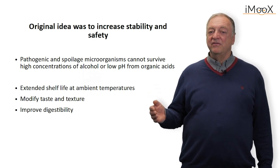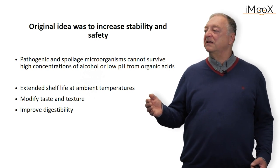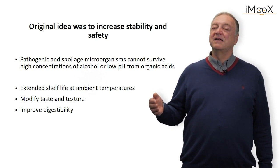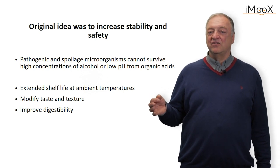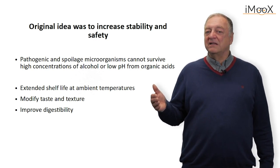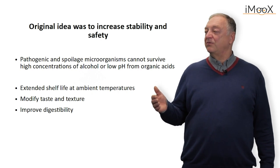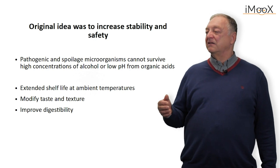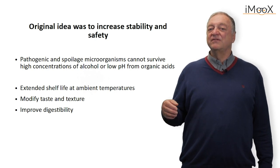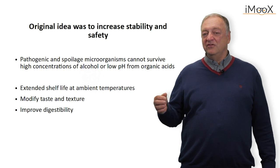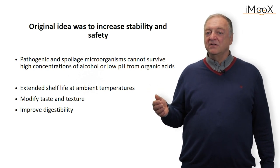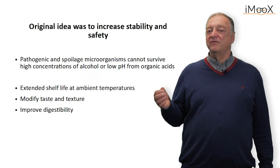Of course, the taste is modified because of the presence of alcohol, and because of organic acids — especially acetic acid, which gives a specific taste to the products. The fermentation also changes the texture; sometimes the products can become very crispy. With vegetables, for example fermented cabbage, we have a very crispy product. Also, the low pH and in some cases the temperature treatment improves the digestibility of the product. So we have several advantages of these fermentations, most importantly because of the control of pathogenic microorganisms.